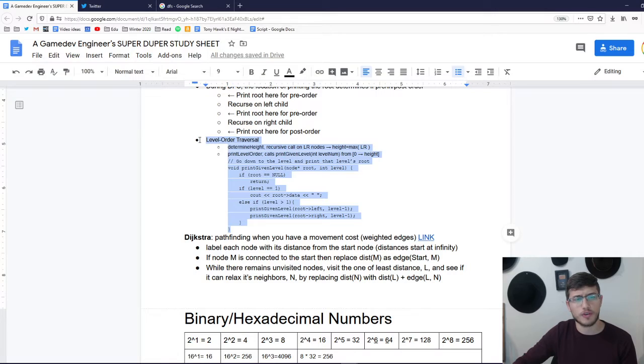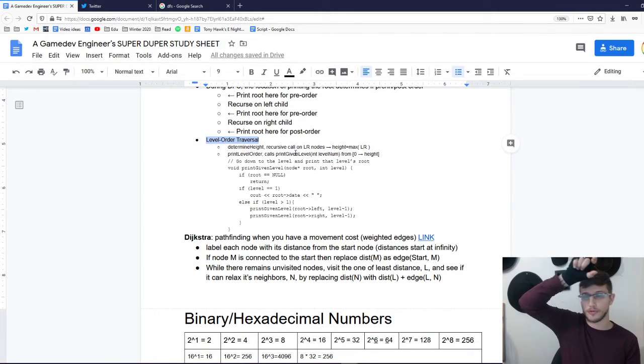Then there's this one interview question where they ask for a level order traversal. I have not seen this a lot, but it's kind of like a weird algorithm I thought would be nice to just drop in here for reference. And in order to do that, the first thing you need to do is determine the height. Oh, so sorry, a level order traversal just means you go through the first root, then you do all of the children of the root, then you do all of the children of those children, all of the grandchildren of the root versus a traditional method of like in order or post order traversal.